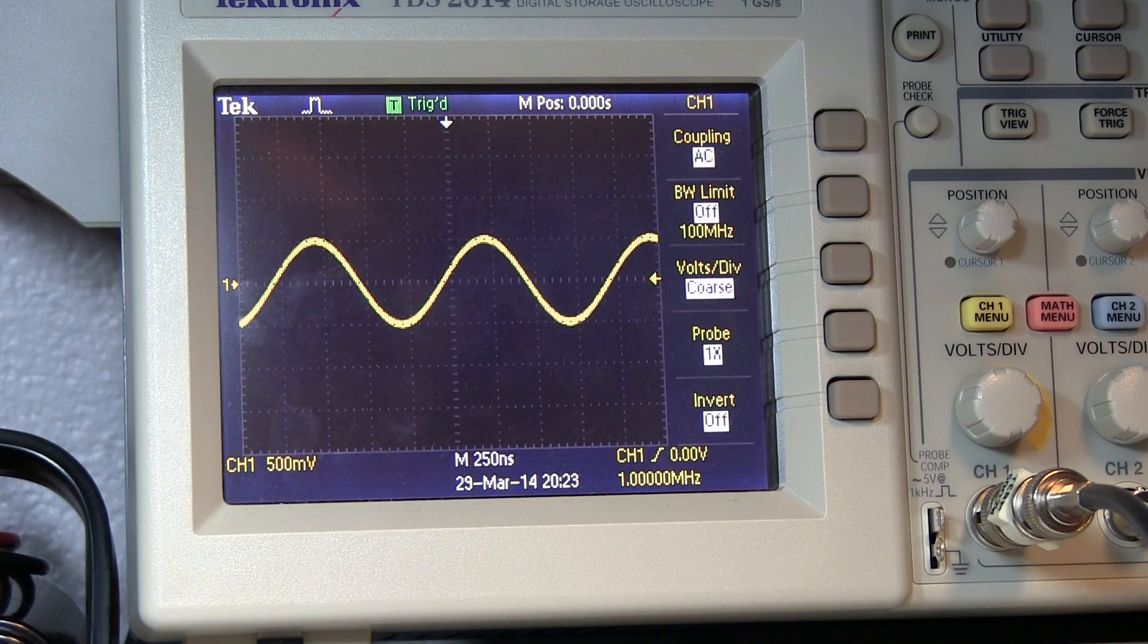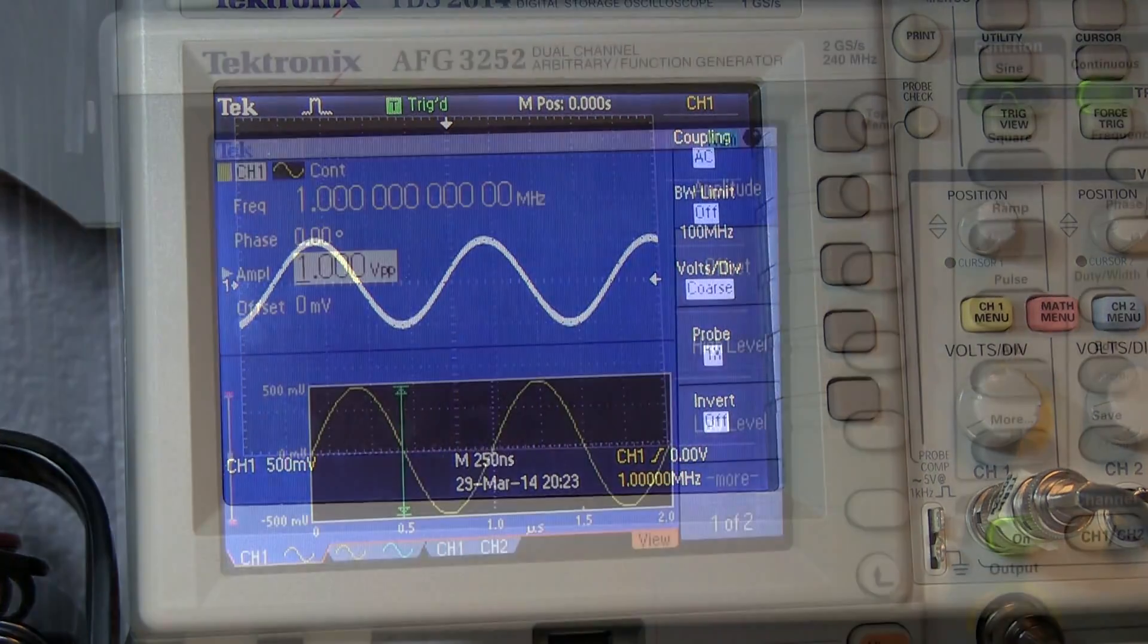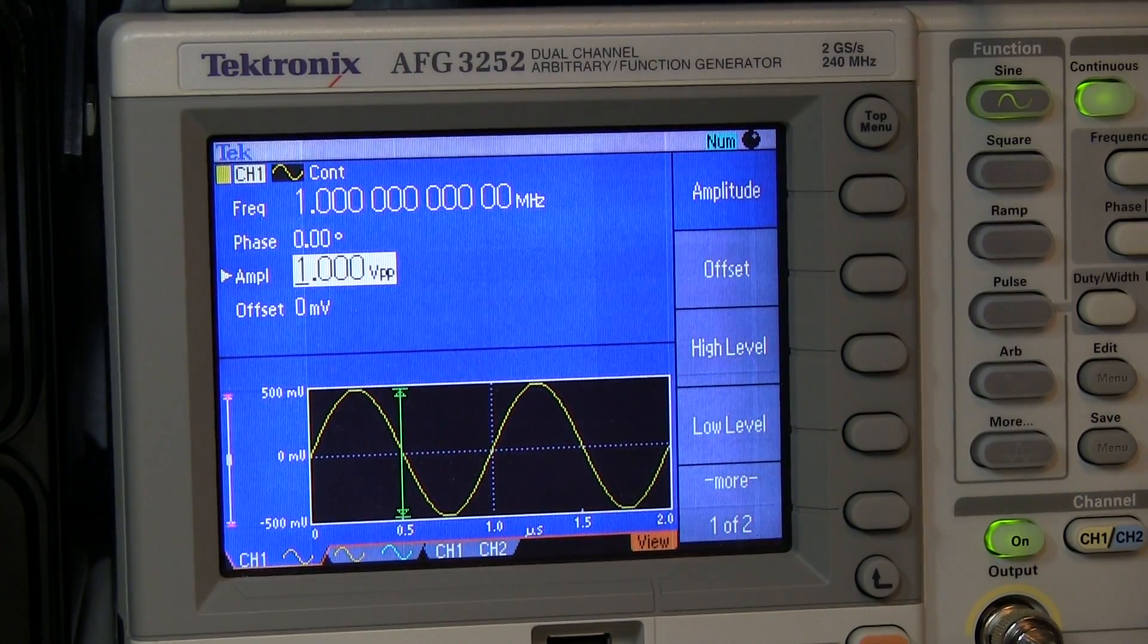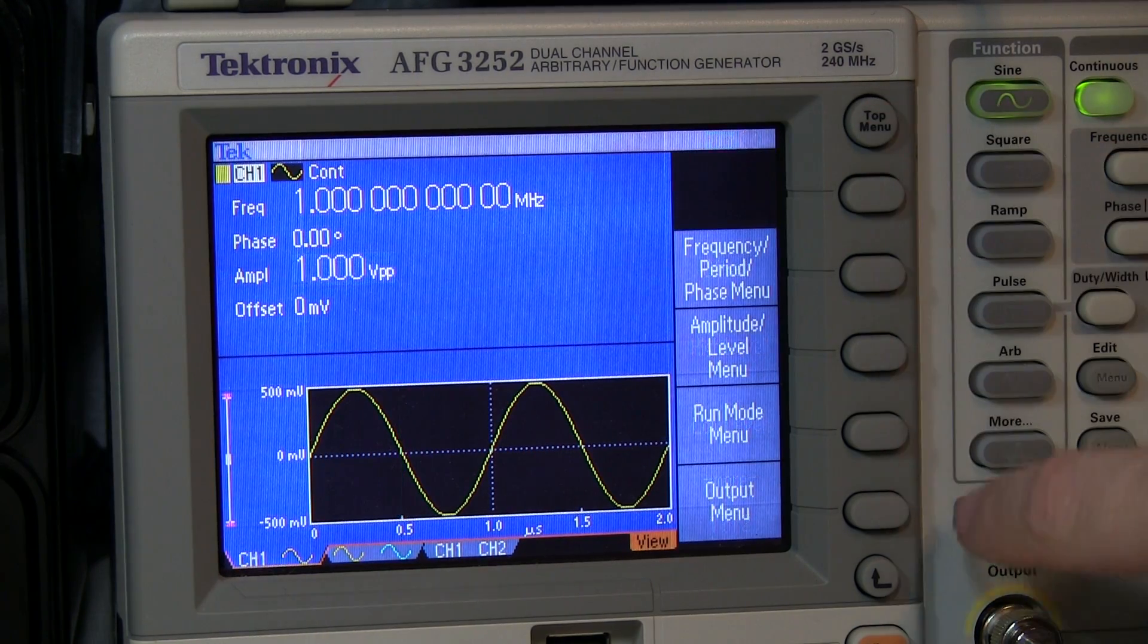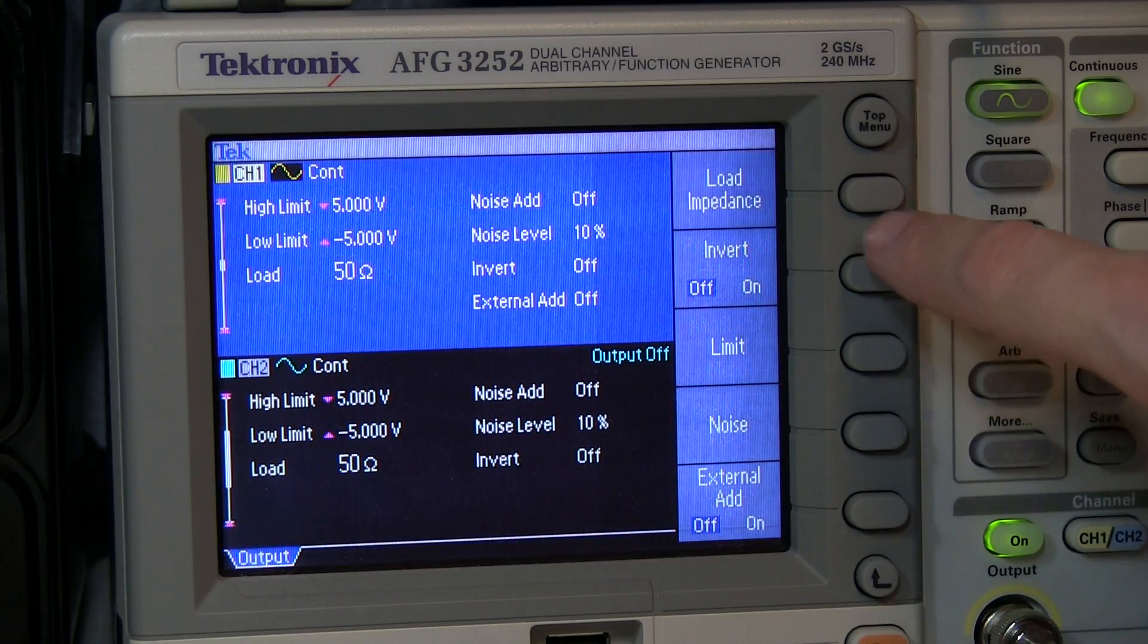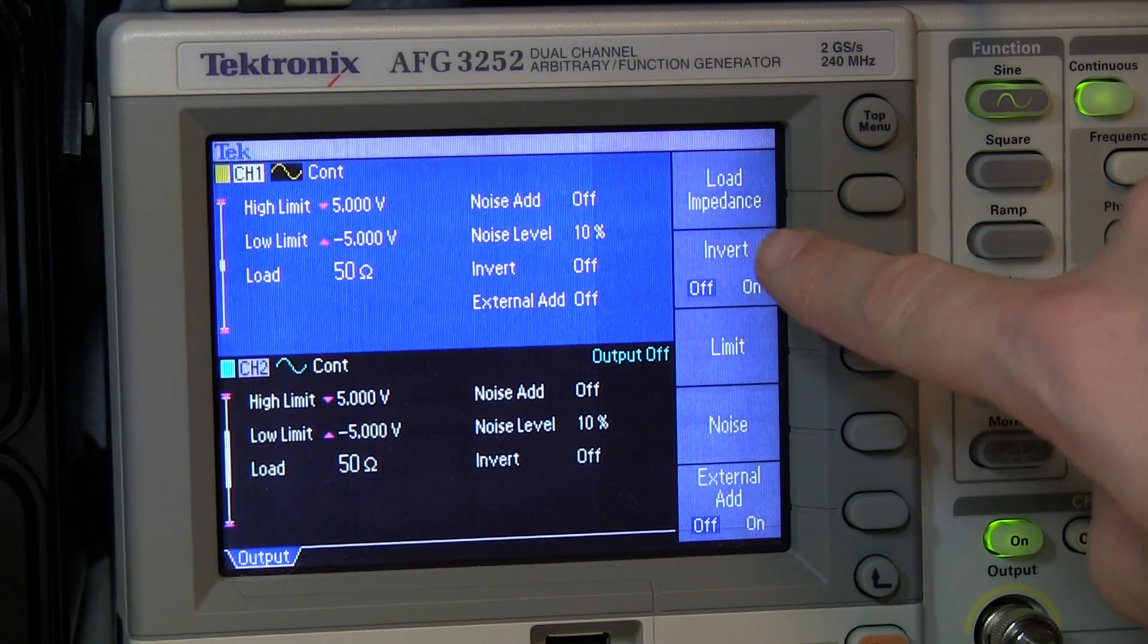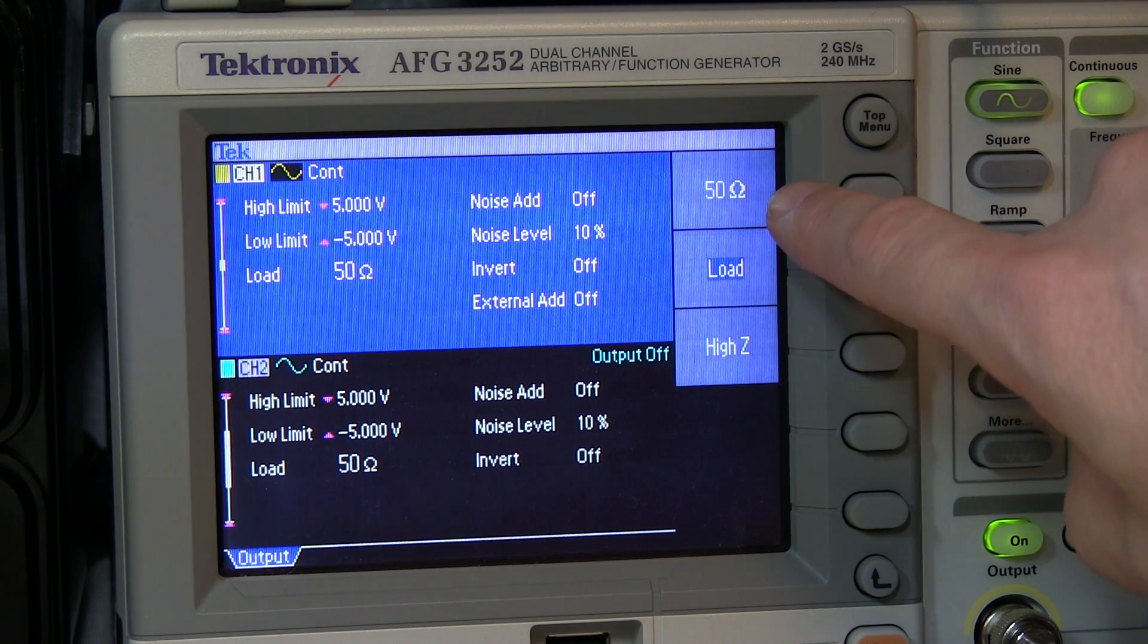Let's take a look at that on this particular function generator. If we go to the top menu and go to the output menu, down here we have the option of specifying what the load impedance is.